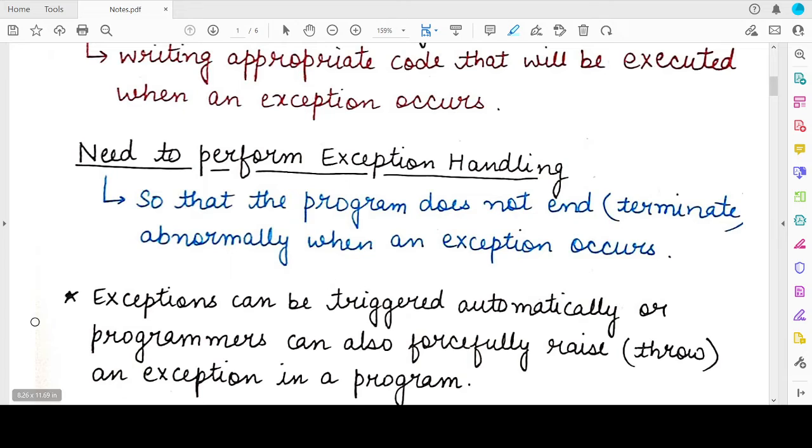Now, one important point you need to remember is that exceptions can occur automatically, that means they can be caused by a mistake from the programmer or the user of the program, or they can also be thrown forcefully. Thrown or raised are the two words that are generally used with exceptions. These are the technical terms that are used when we say an exception has occurred. So instead of saying an exception has occurred, we say the Python program has raised or thrown an exception.